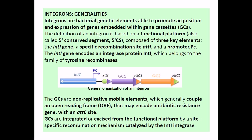Gene cassettes are non-repetitive sequences mainly made up of an open reading frame and they may or may not encode antibiotic resistance genes. They also have a site called attC, which is another attachment site for other genes. New genes can make entry through any of the gene cassette internal barriers — for example, between gc1 and gc2 there is attC1, between gc2 and gc3 there is attC2 — so different attachment sites allow new genetic elements to enter.